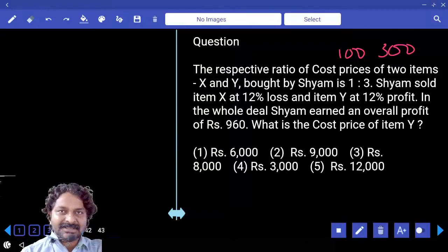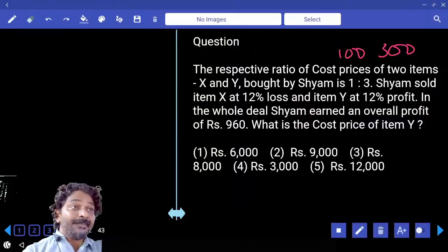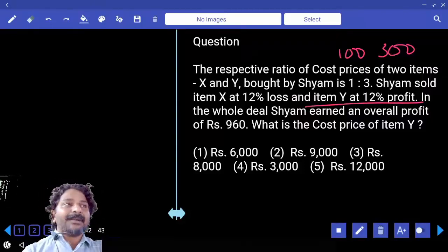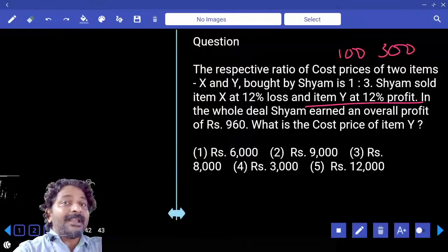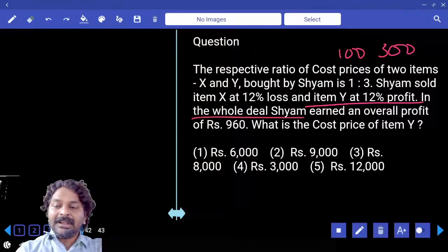On the first item there is 12% loss, 12% calculated on 100, which is -12. And item Y at 12% profit, 12% calculated on 300, which is +36.